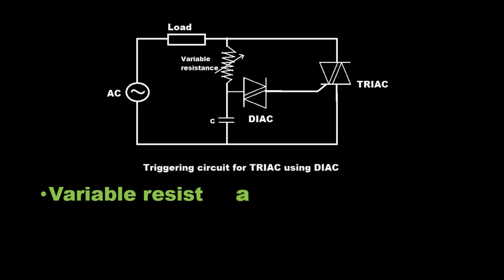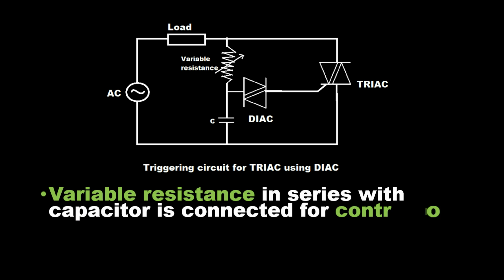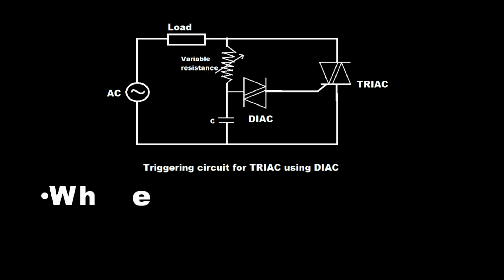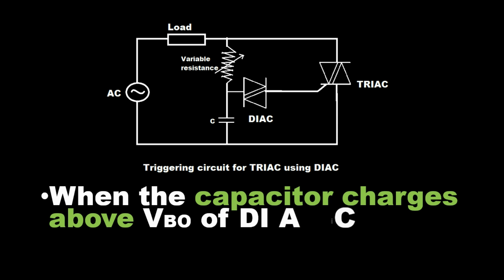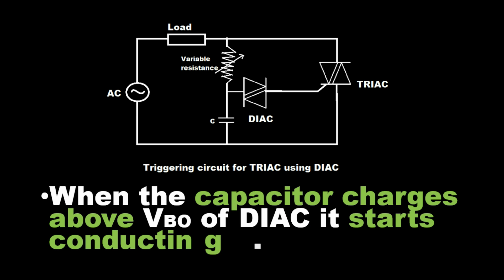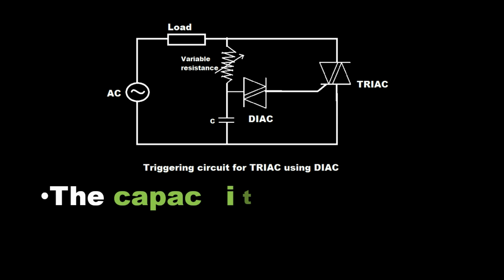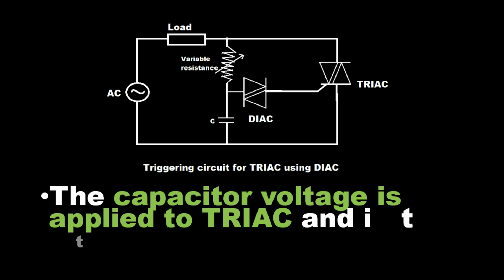Variable resistance in series with capacitor is connected for controlling the charging of capacitor. When the capacitor charges above VBO of DIAC, it starts conducting. The capacitor voltage is applied to TRIAC and it turns on.